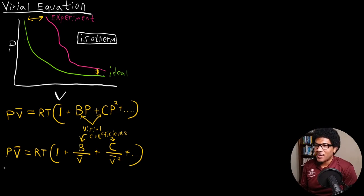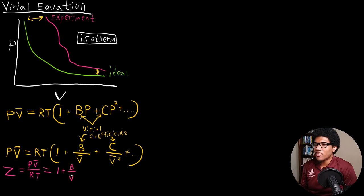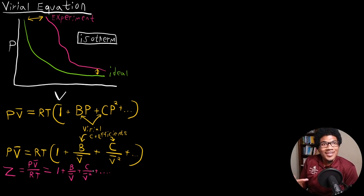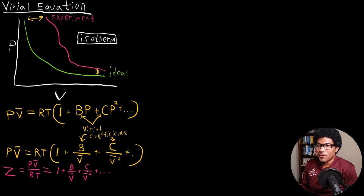Now, what you'll notice is that if we divide by RT, that's just going to be our compression factor Z, which is PV̄ over RT. Everything else is just on the right-hand side from our expansion: 1 plus B over V̄ plus C over V̄ squared plus dot dot dot. This is actually really neat because now this gives us a ready physical interpretation of what these higher order expansion terms mean. We know the compression factor tells us how much the real gas deviates from ideal behavior, so our expansion physically is capturing the interactions that cause the real gas to deviate from ideal behavior.